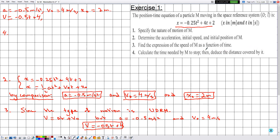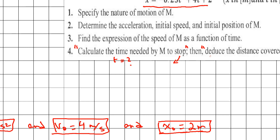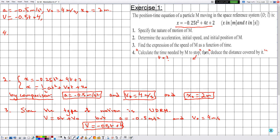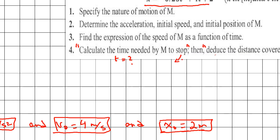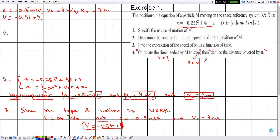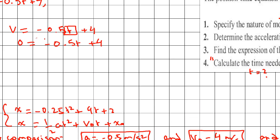For number four, part one: calculate the time needed by M to stop. When M stops, the speed equals zero. Using the speed-time equation and setting v = 0, we get: 0 = -0.5t + 4. This is a linear equation in one unknown, t.